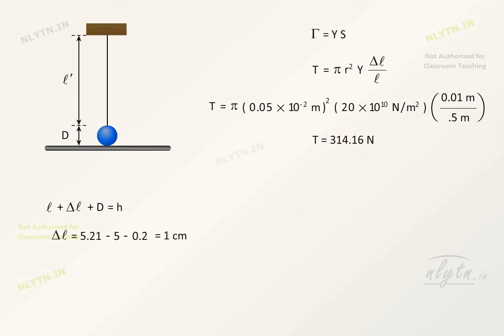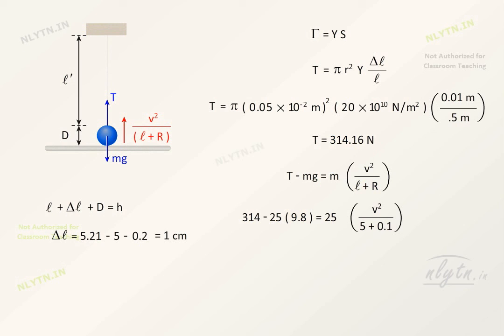Now, using the free body diagram of the sphere at the lowest point, we can say that t minus mg should be equal to mass of the sphere into its centripetal acceleration. Substituting the values, we get the value of v.